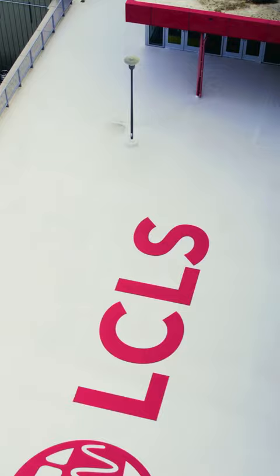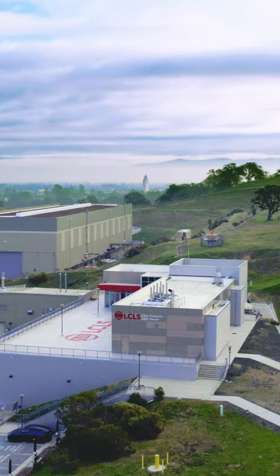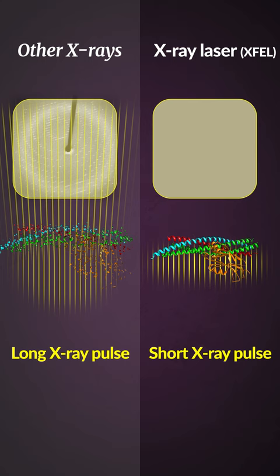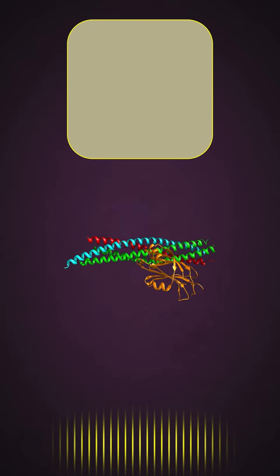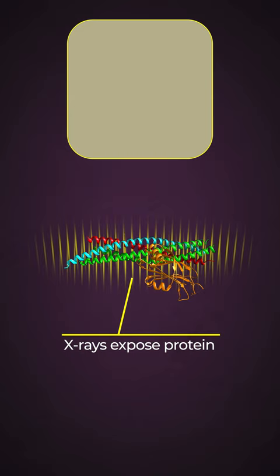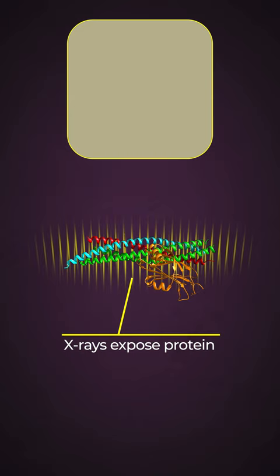But they found a solution at LCLS, the x-ray laser at SLAC. The advantage of x-ray lasers compared to other x-ray light sources is how extremely short their pulses are. Short x-ray pulses expose the proteins and generate enough data to map the atomic structure with precision before causing any significant damage. That's the power of x-rays.